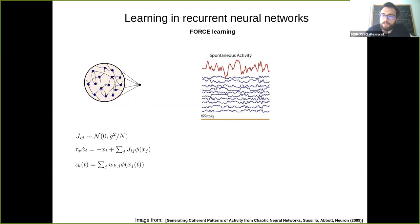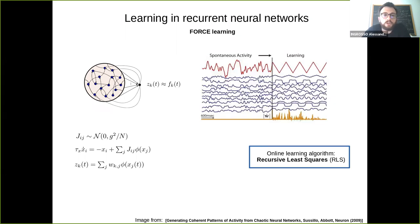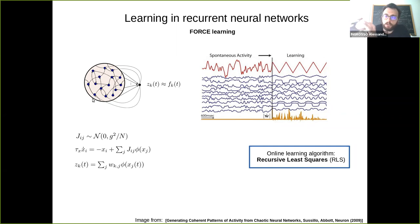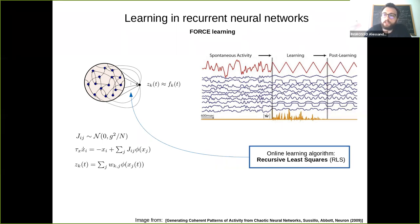The popular FORCE learning algorithm learns the readout weights w, with feedback from the readout to the actual neurons — think of this as a rank-k perturbation to the initial random connectivity matrix, where k is the number of readouts. Using a fast least-squares method like recursive least squares, you can train these weights, and after training the network is able to self-generate complicated readouts.